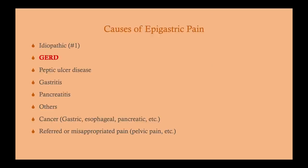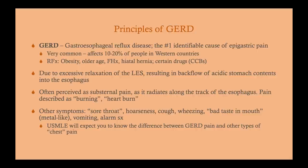Some causes of epigastric pain: the number one cause is idiopathic, but a close second is reflux disease. Other causes include peptic ulcer disease, gastritis, pancreatitis, cancer, and referred or misappropriated pain such as pelvic pain. Obviously, if a woman of reproductive age comes in with belly pain, you need to get a pregnancy test. Gastroesophageal reflux disease is the number one identifiable cause of epigastric pain.